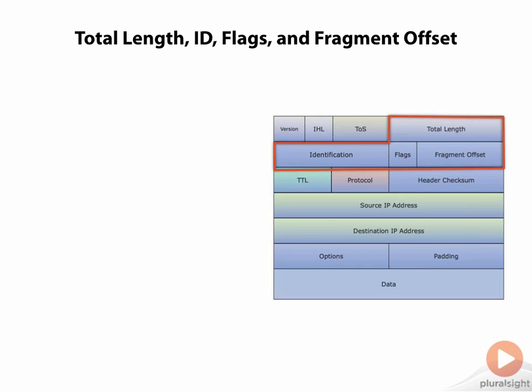Identification, flags, and fragment offset all relate to the process of fragmentation. The identification field acts as an identifier for a group of fragments that are part of a larger IP packet.